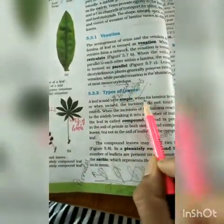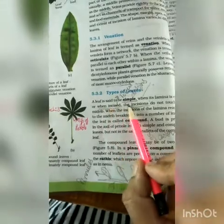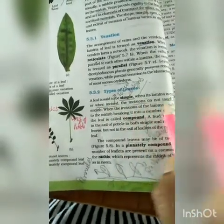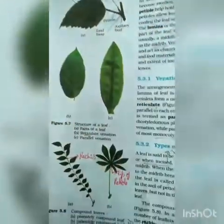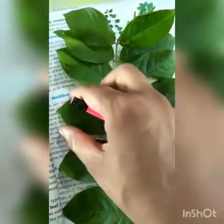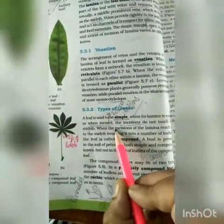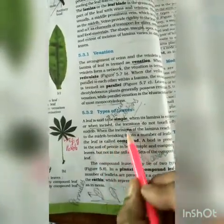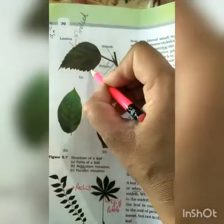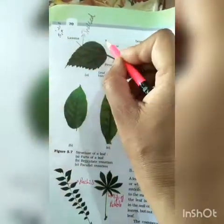Next is types of leaf. A leaf is said to be simple when its lamina is entire — this is called a simple leaf. And when incisions of the lamina reach the mid-rib, breaking it into a number of leaflets, it is called compound. This is a compound leaf.